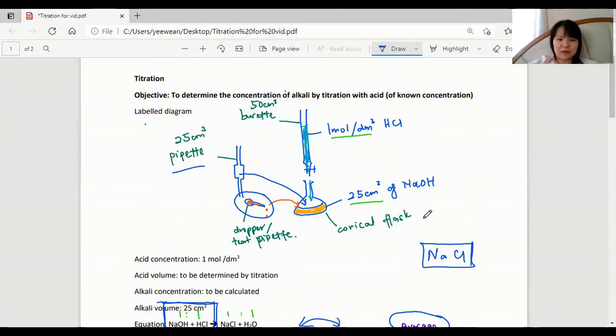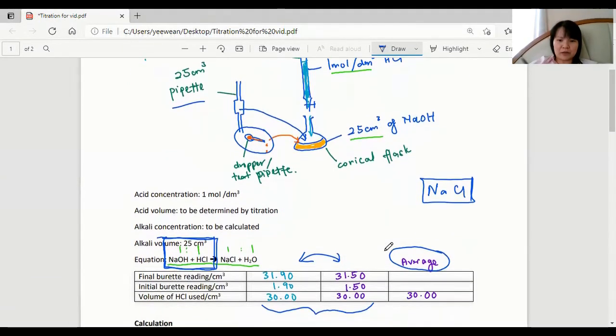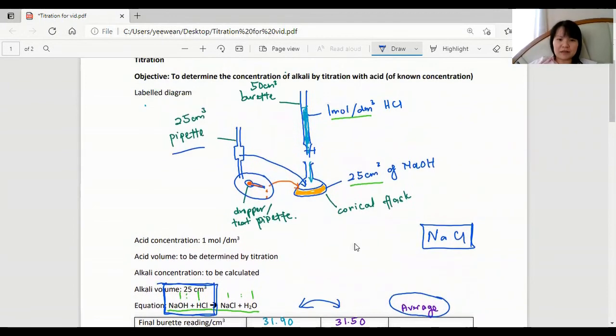So we'll have to repeat this experiment using the average value here, which is 30 centimeter cubes. And we'll repeat that without an indicator, just 30 centimeter cubes directly from the burette.